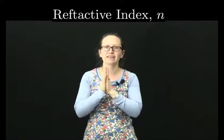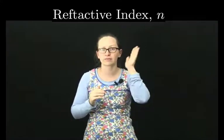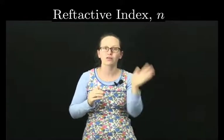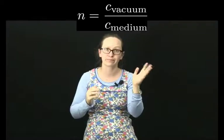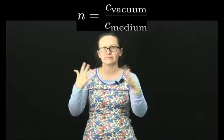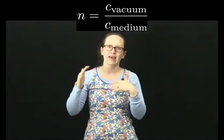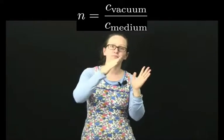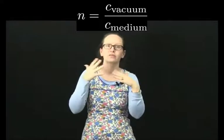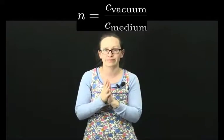Different mediums have what's called different refractive indices. The refractive index of a medium is given the symbol lowercase n, and it is equal to the speed of light in a vacuum over the speed of light in a medium. So different mediums slow light down different amounts, and the more the light slows down, the more it bends in that medium.